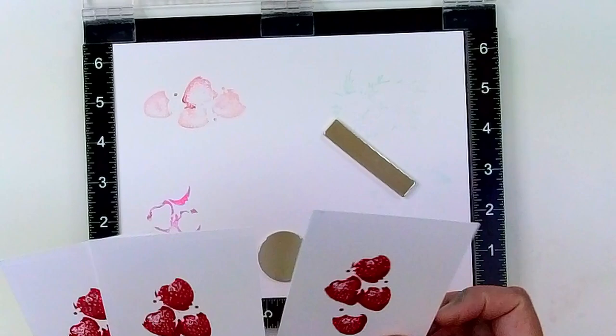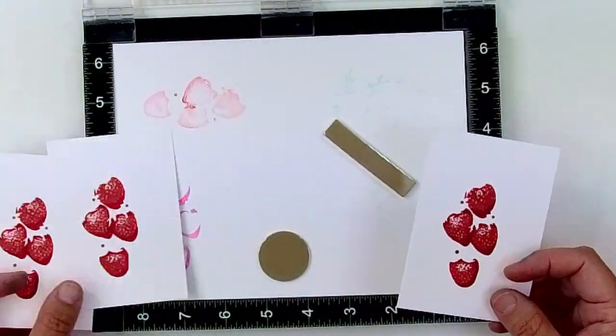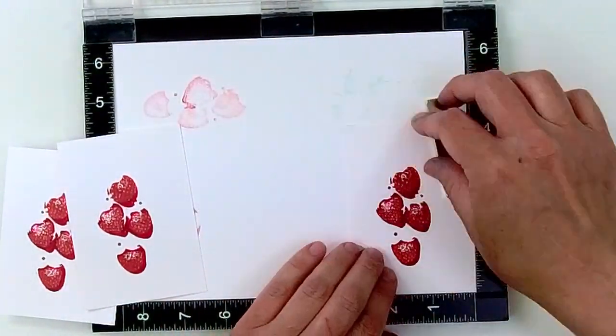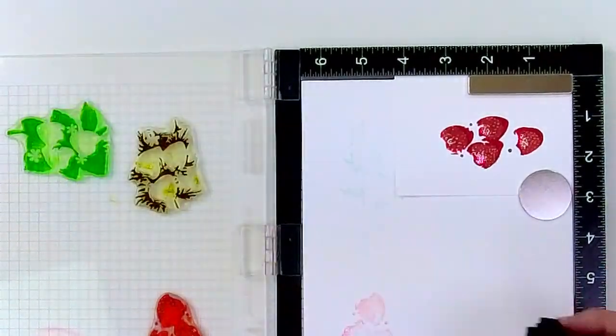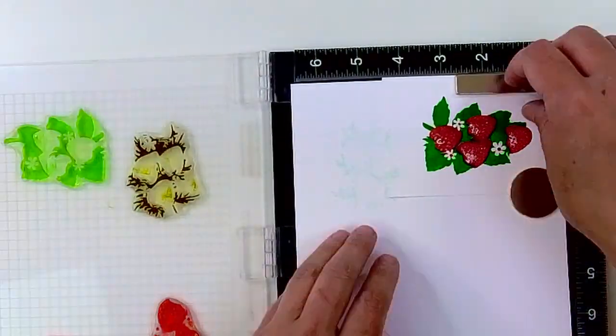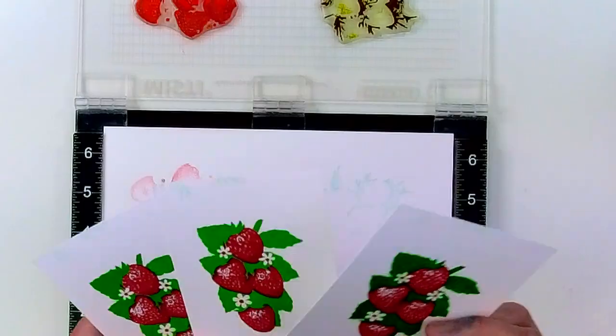So I'm just rotating my MISTI again, and I'm easily going to stamp those shadows onto the next three. Now I move over to the next corner, and easily I can just stamp the leaves onto all three of those again.